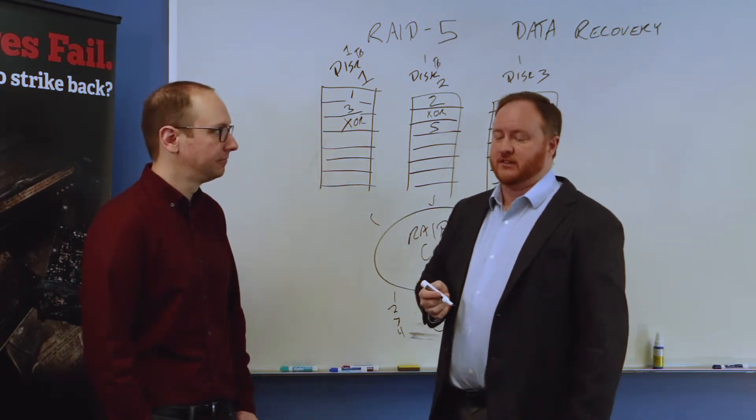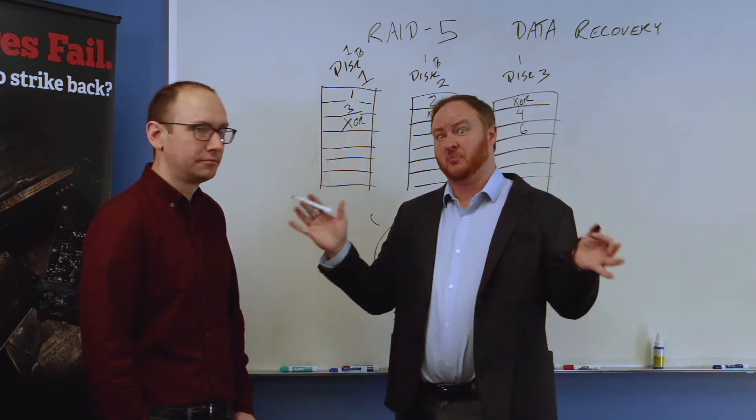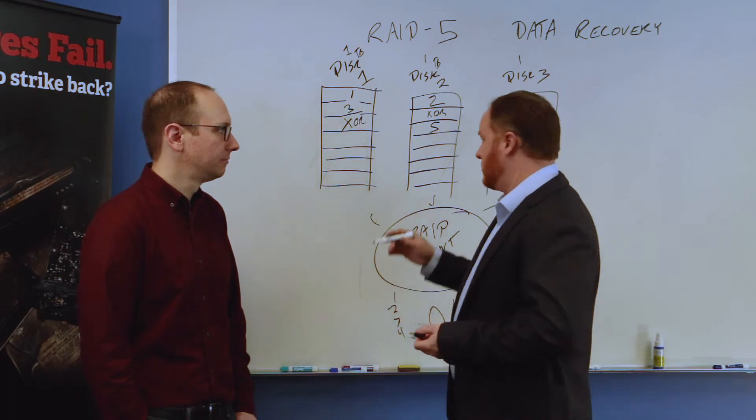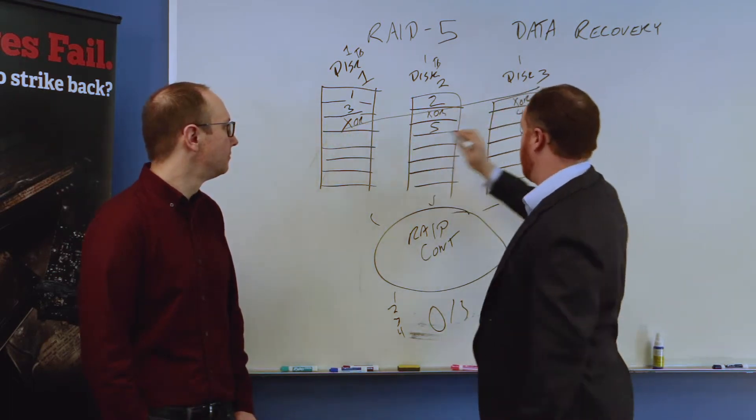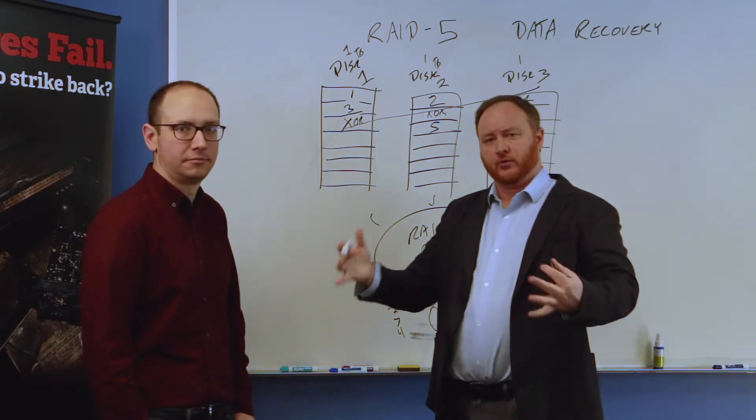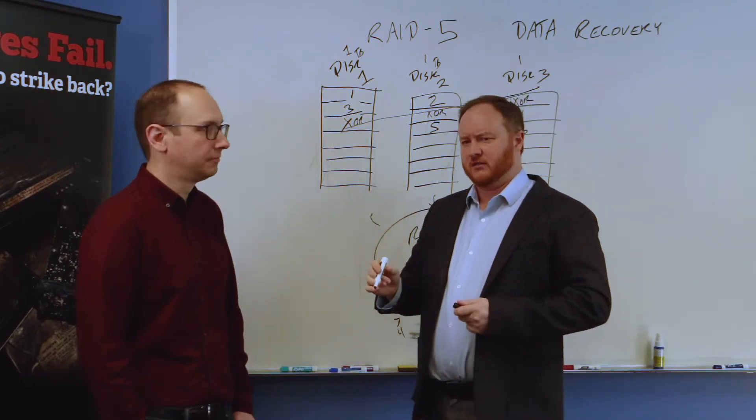It's basically gonna look like a bunch of gobbledygook. It's almost gonna look like encrypted data in a lot of ways. But what we basically see is that we see these patterns that kind of go through when we look at all three drives at once. We'll see, oh, it looks like this is the RAID algorithm.